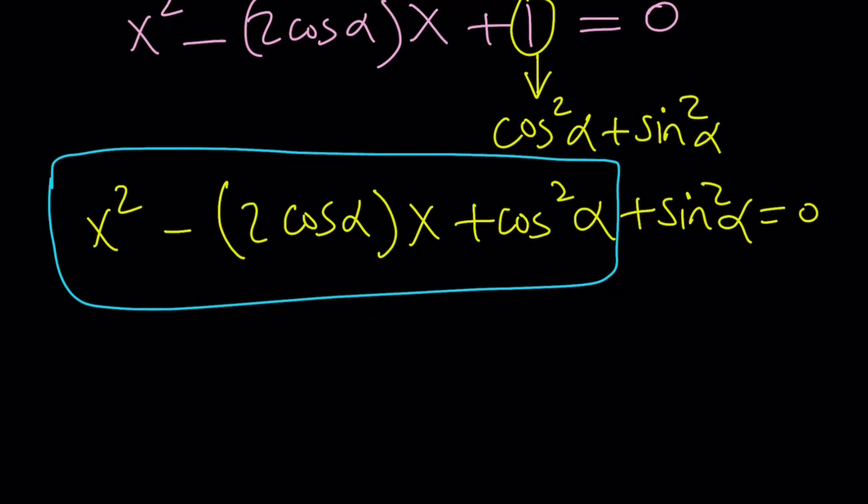And if you got it, perfect. If you didn't, that's fine too. So, this is x minus cosine alpha squared. Beautiful. Plus sine squared alpha. Well, let me write it as sine alpha squared. Same thing. Equals 0.